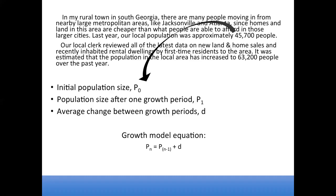Reading this context, we can see that the initial population is 45,700 people in this rural area. After one year, the population is determined to have increased to 63,200 people. So our initial population size, or P0, is 45,700, and the population size after one growth period, or one year, is 63,200 people.